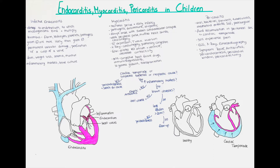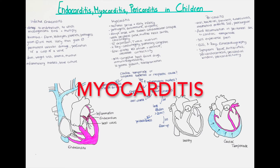After the blood cultures have been taken we can initiate empirical antibiotic treatment immediately. If the antibiogram deems it necessary, the antibiotic can be changed after the results of the blood culture and antibiogram are available. The antibiotics of choice are usually penicillin and nafcillin. The treatment usually occurs intravenously and is continued for six weeks, after which another blood culture is taken to confirm that the bacteria were eradicated.